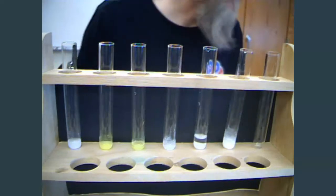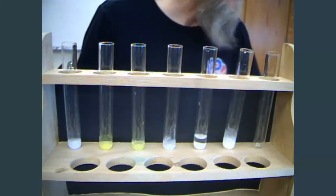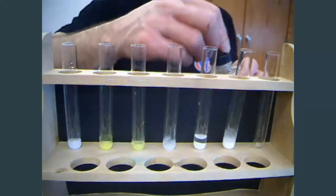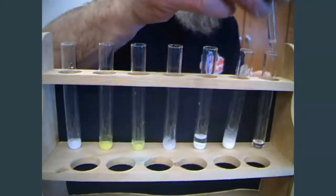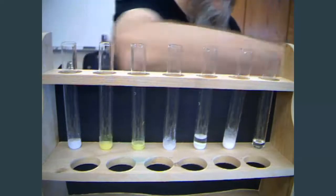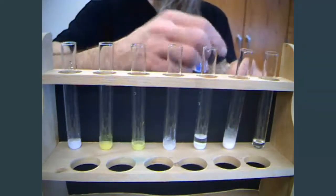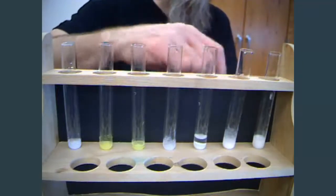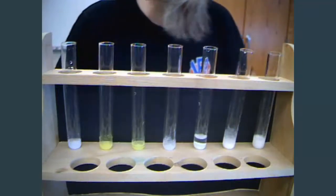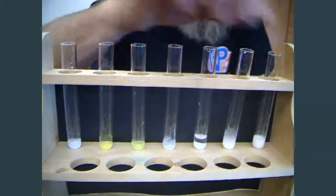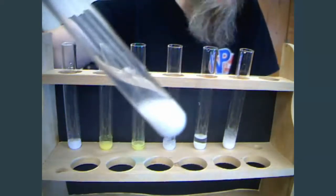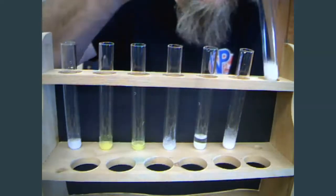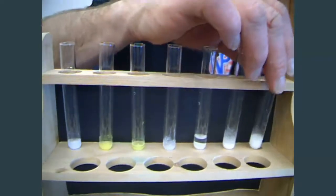On to number 14. Sulfuric acid and lead nitrate. We'll put our lead nitrate in. We'll add a little bit of sulfuric acid. And definitely we can see in that case we do have a precipitate formed as well. So in number 14 between sulfuric acid and lead nitrate, definitely a reaction.